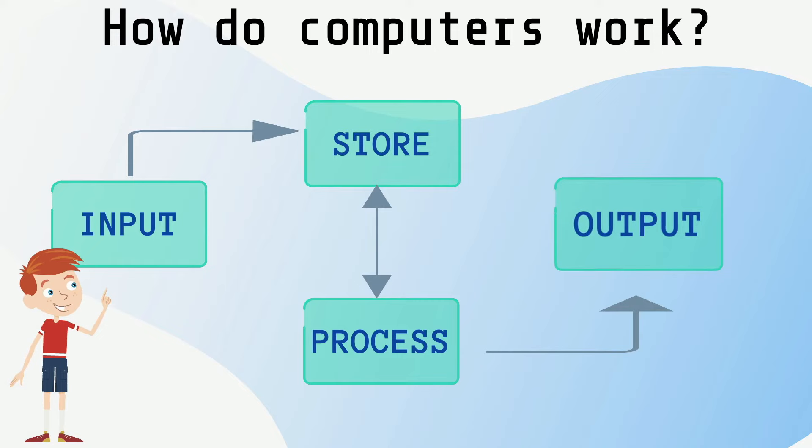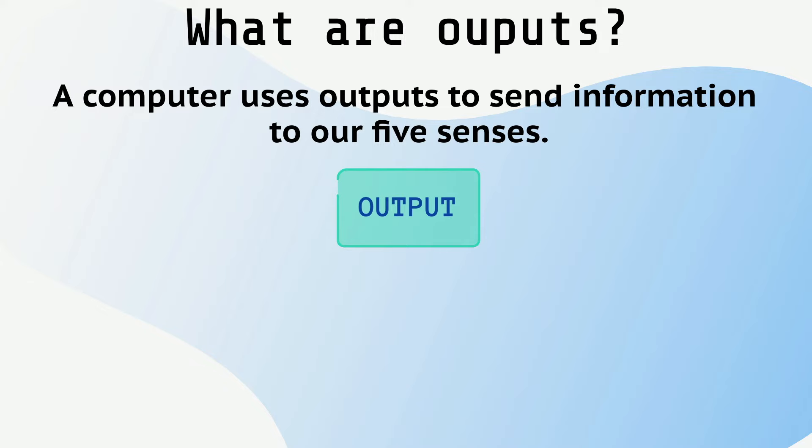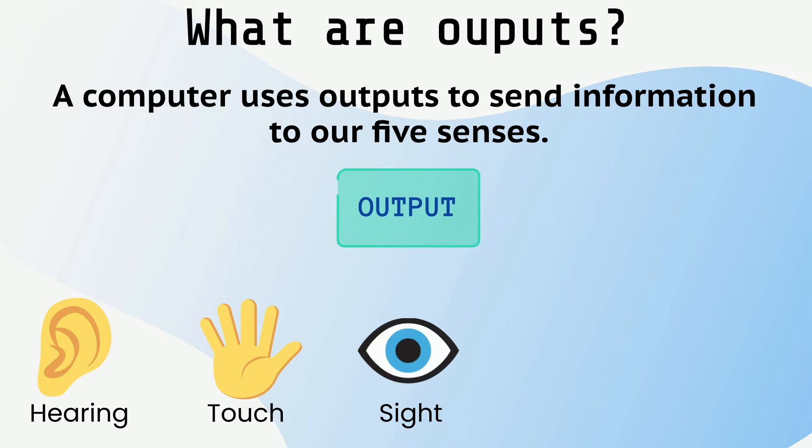A computer uses outputs to send information to our five senses: hearing, touch, sight, taste, and smell. These are our five senses.